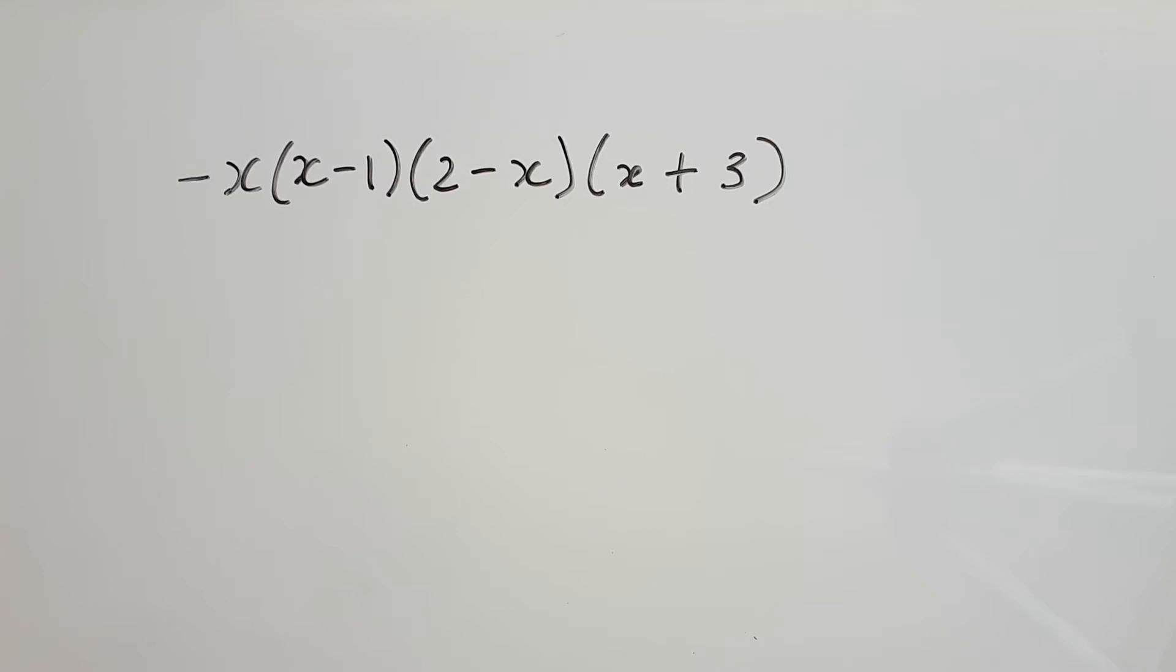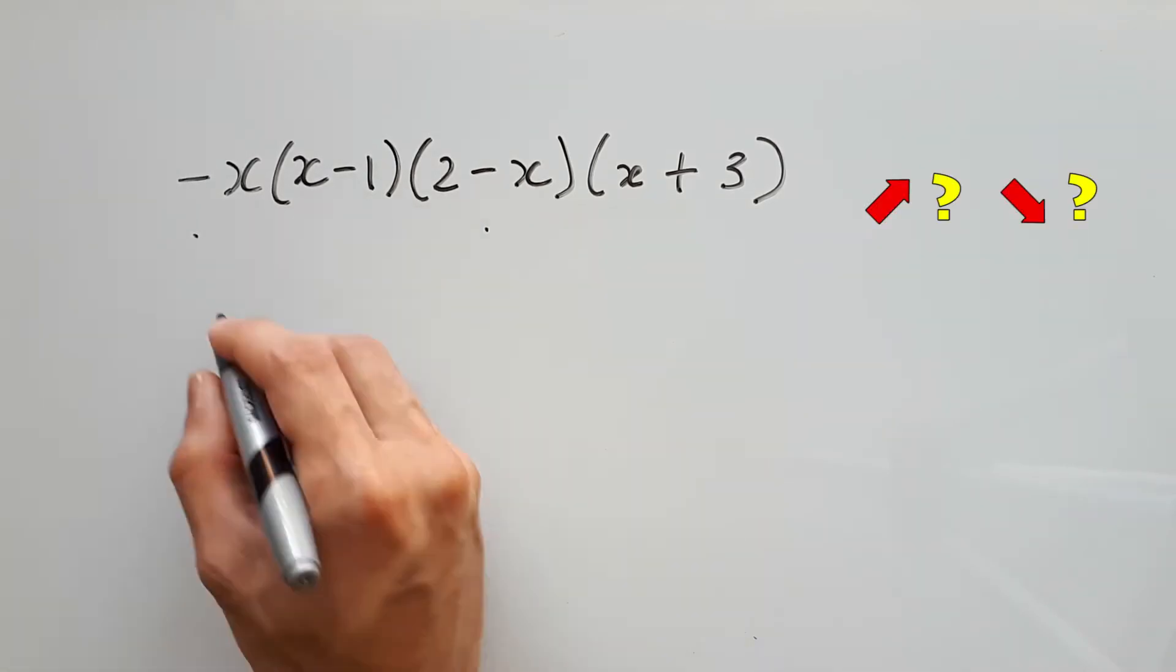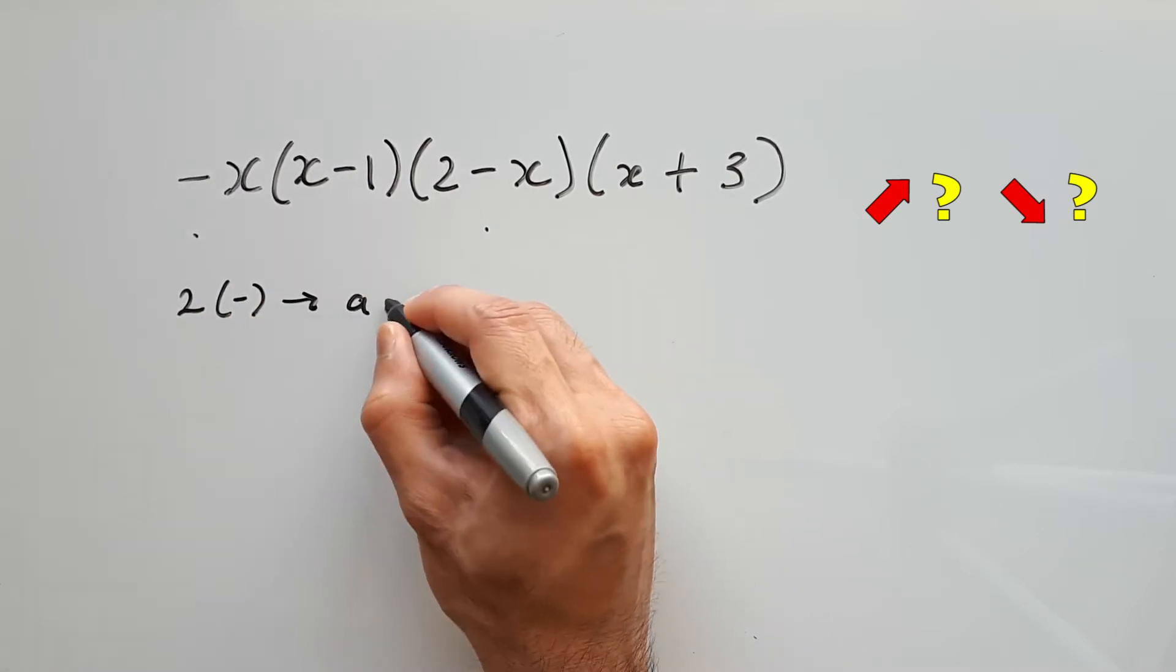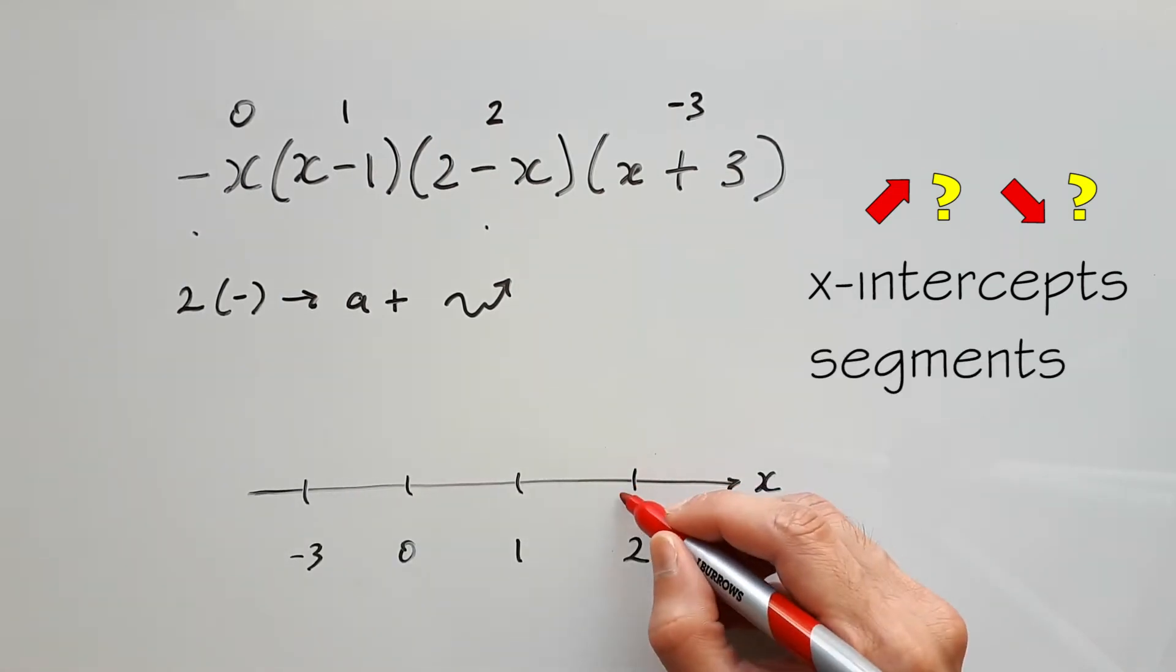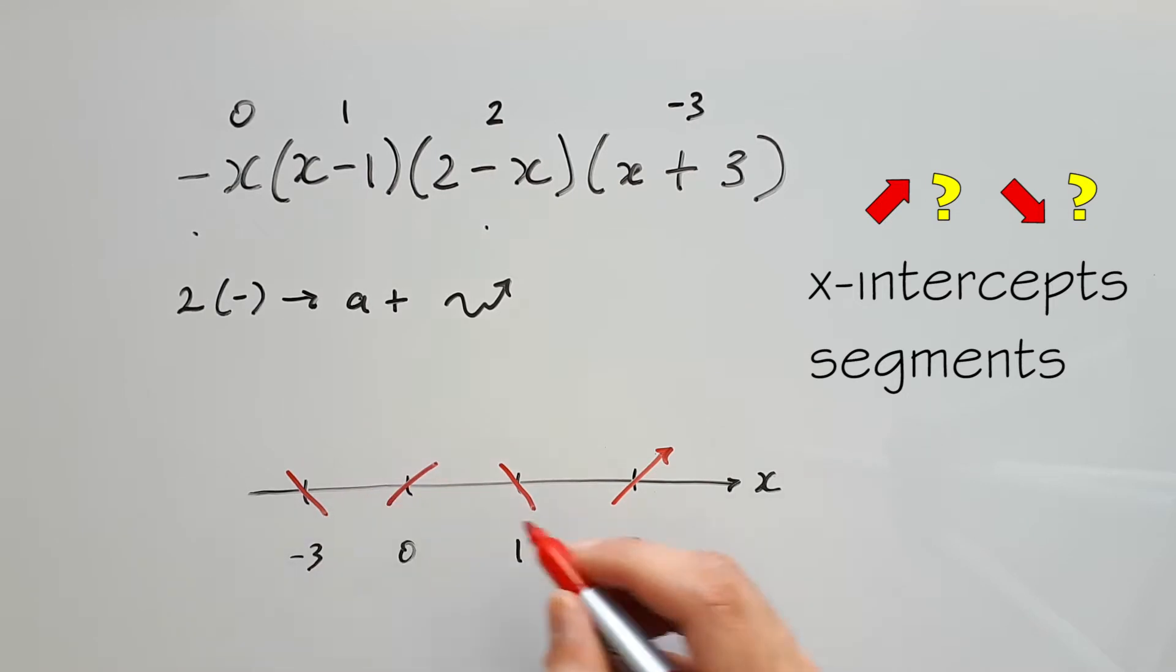This is what a factorized polynomial looks like. If you need to do a quick sketch for something like this, then all you need to do is three things. First, find out whether the graph is going to finish upward or downward at the end. Then you want to find the x-intercepts, followed by putting all this information together and drawing a few segments on the x-axis. When you connect those up, you get the graph.